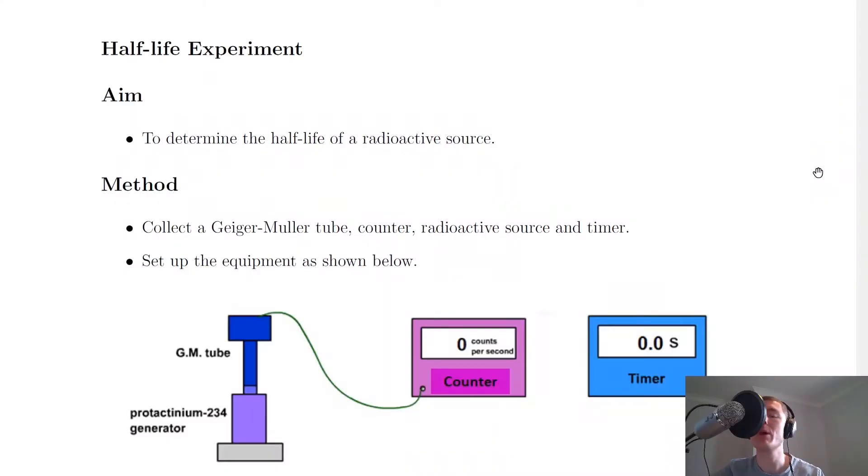For the National 5 Physics exam you need to be able to describe an experiment to determine the half-life of a radioactive source. So we're going to look at this in the steps of a scientific report. The aim for this experiment would simply be to determine the half-life of a radioactive source.